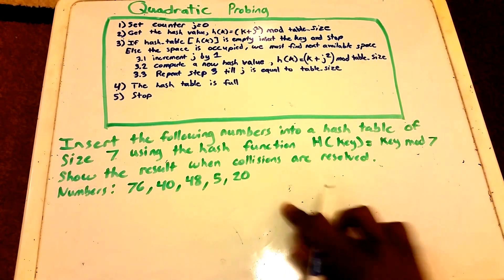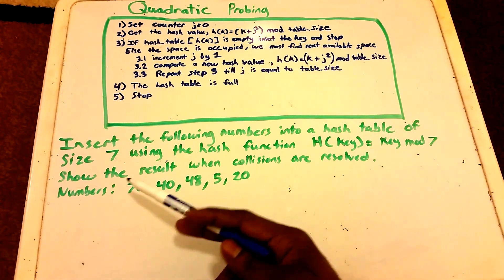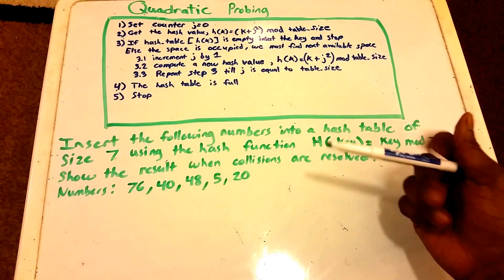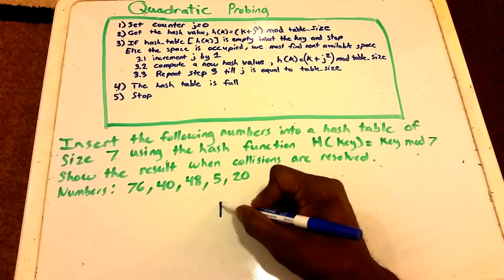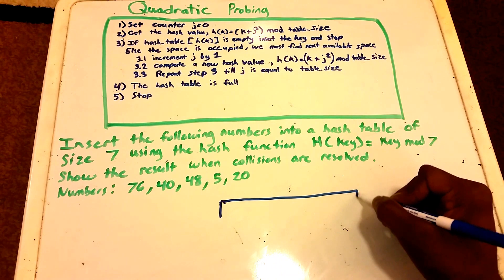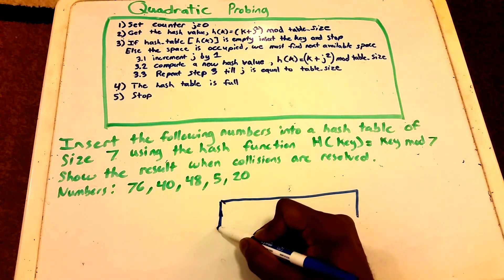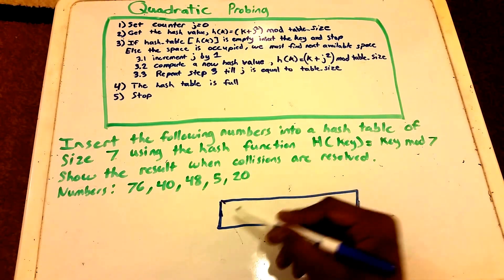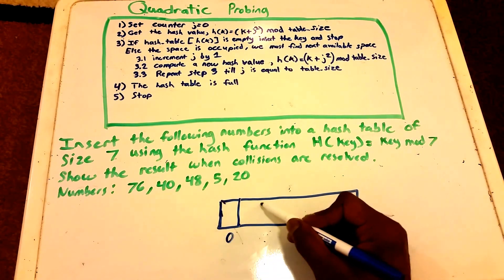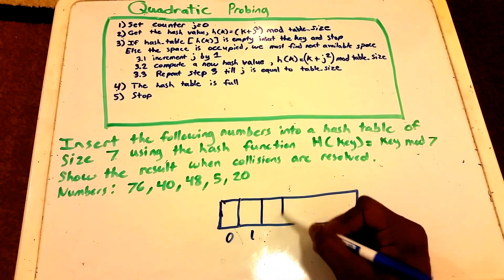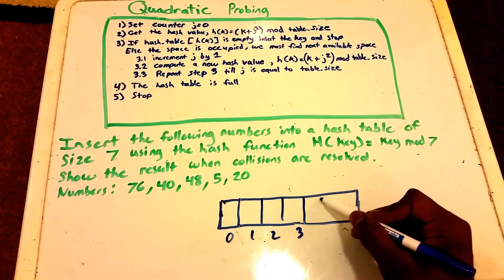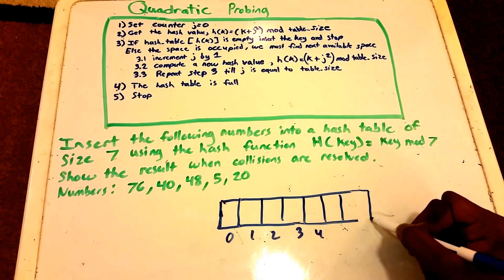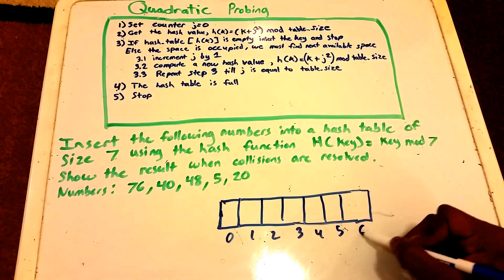Now we're going to insert these values into our hash table. I'll create the hash table — it's size seven, with indices zero through six.